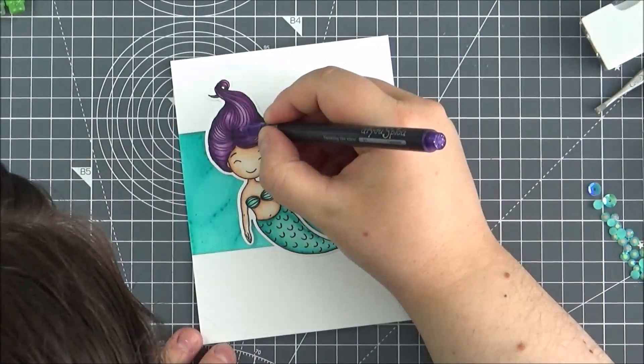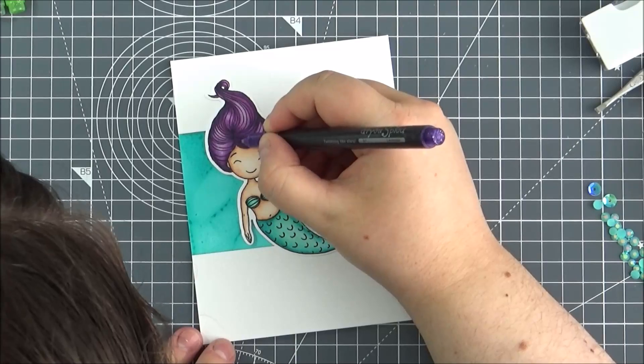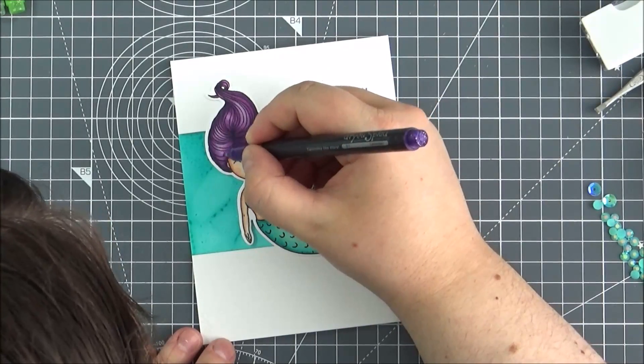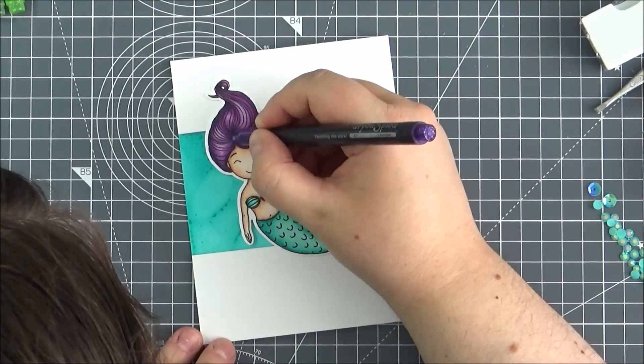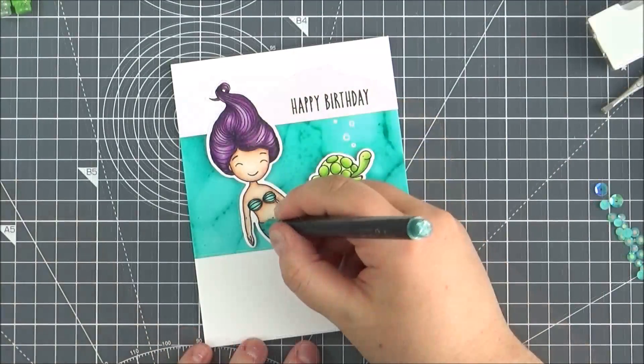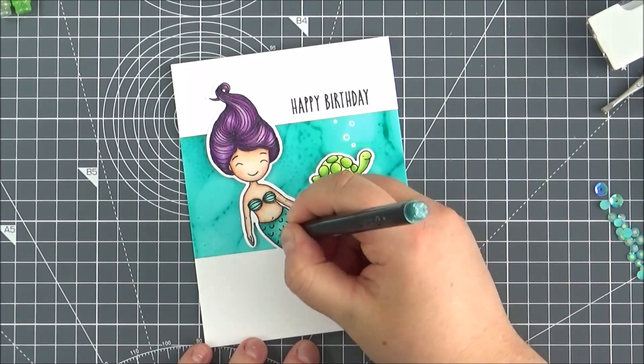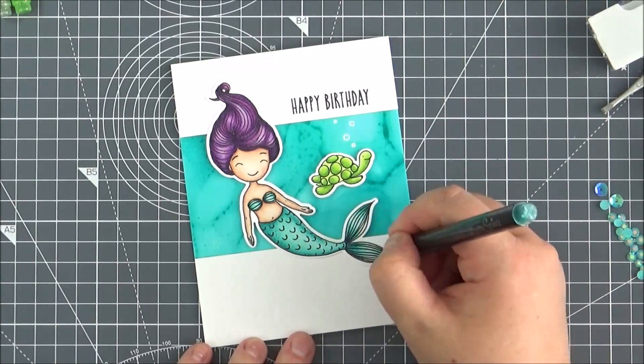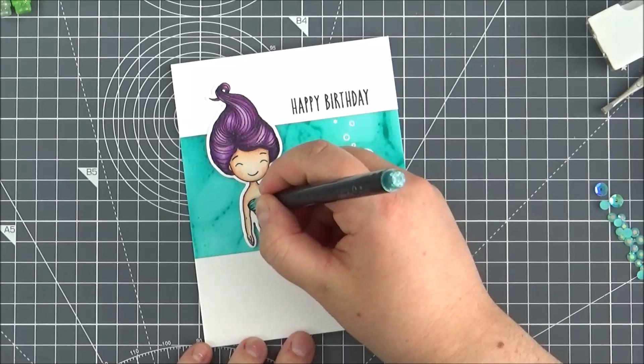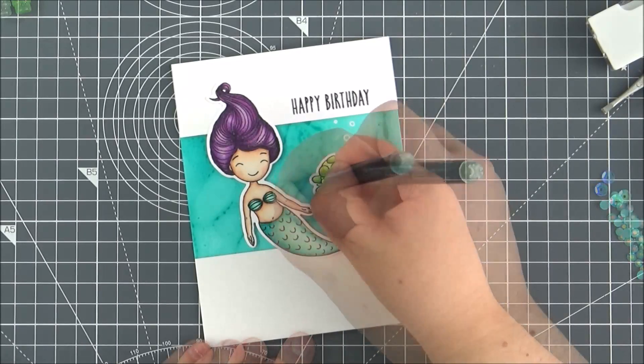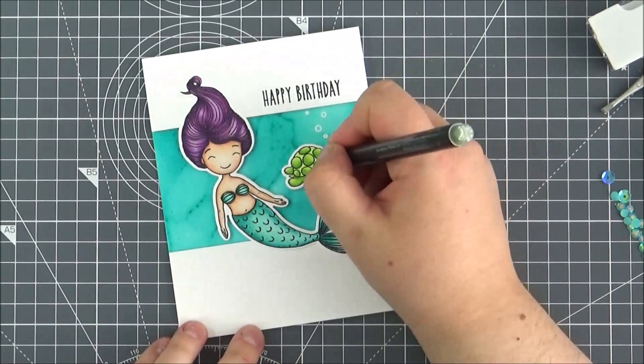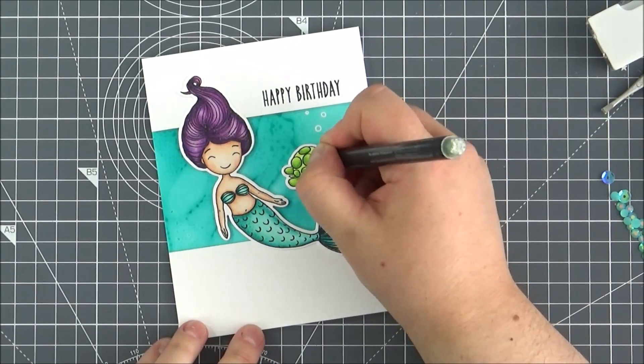Because she's a mermaid and I thought she might like some glitter, I'm using the Copic Spica pens to add glitter onto her hair and onto her tail. I've used two purple shades on her hair and then one turquoise color on her tail. I'm adding tiny little dots onto the portions that are the darkest and then adding a little bit of green onto the turtle as well.